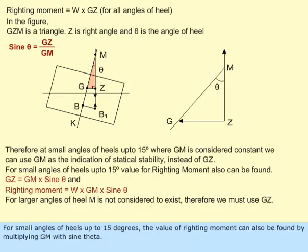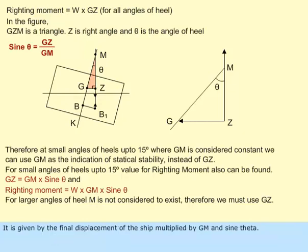For small angles of heel up to 15 degrees, the value of righting moment can also be found by multiplying GM with sin theta. It is given by the final displacement of the ship multiplied by GM and sin theta.